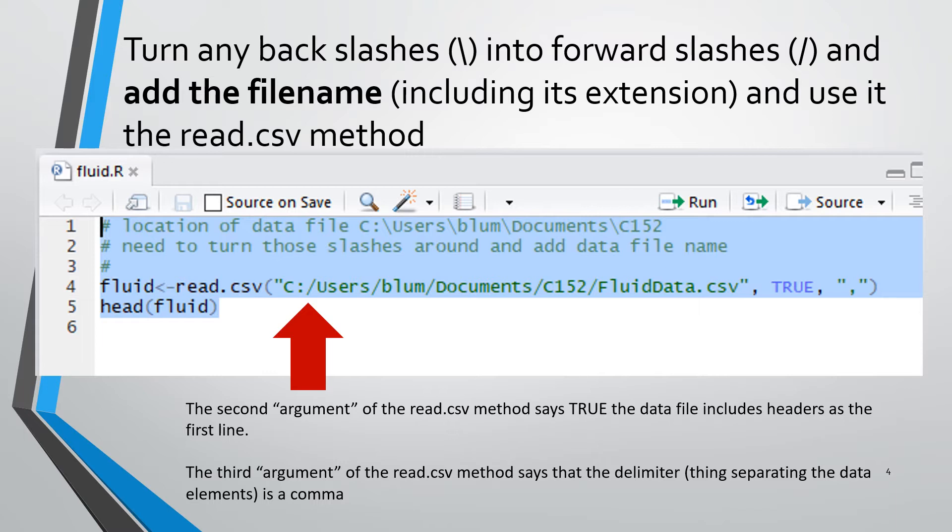The second argument says that our CSV file had headers. If you look back, there were headers before there were any numbers, so we're just letting our program know that is the case. And the third argument is what we call a delimiter. What is used to separate one piece of data from the next in the file? And that was a comma, hence comma separated values.